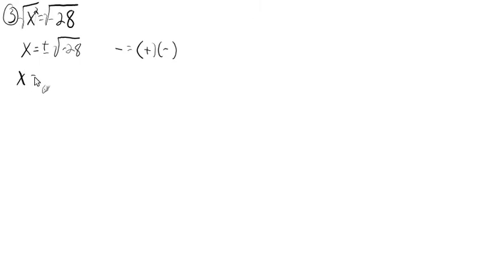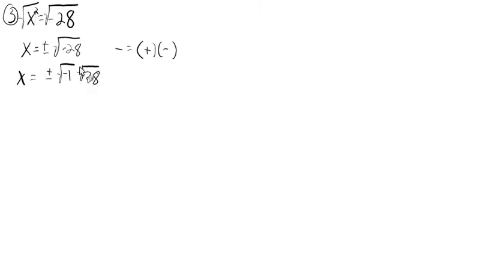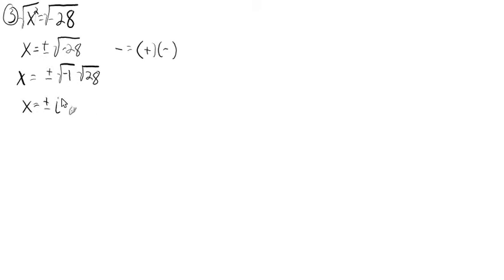So we'll deal with this using imaginary numbers. We'll write plus or minus the square root of negative 1 times the square root of positive 28. If we were to multiply these together, we would get negative 28. But now what we can do is just call the square root of negative 1 "i". So plus or minus i times the square root of 28.